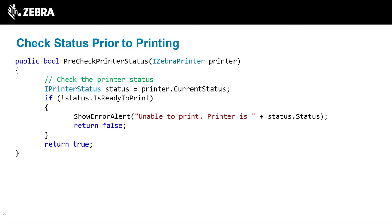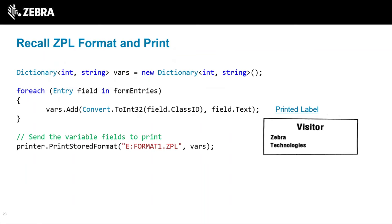Status checking is built into the APIs to make it as simple as possible — just a current status function and an alert to display the status. The check only triggers when the printer is not ready to print. Then the print job is sent: the dynamic data entered previously — those two variable fields — is sent to the printer with instructions to recall the stored format, fill in the fields, and print. This triggers the print event and produces the label.